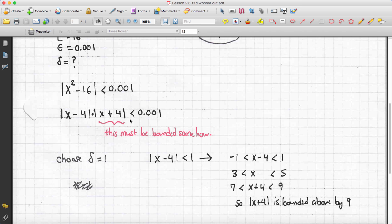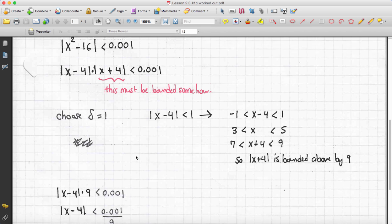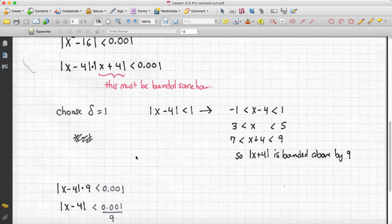So, here's what we do. Because delta is the neighborhood that we're looking for, we can begin this process by arbitrarily choosing delta equals 1.